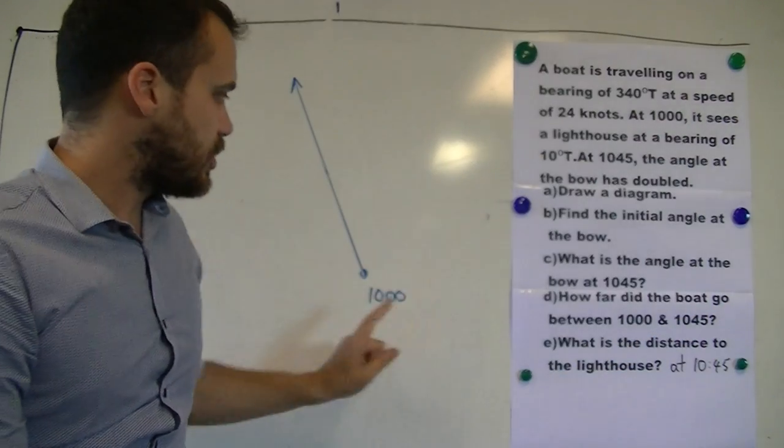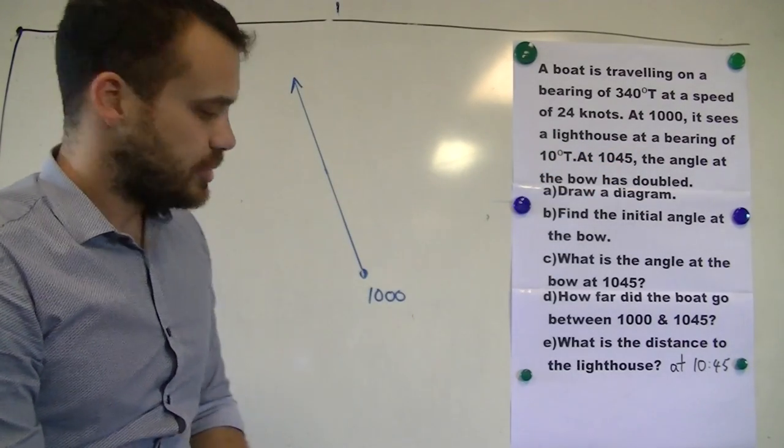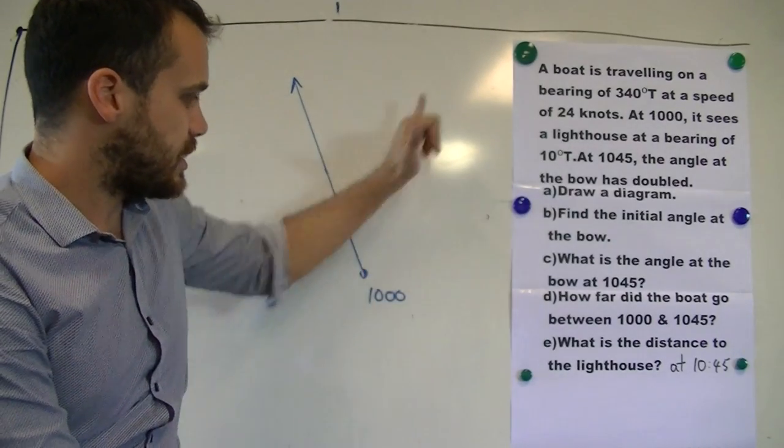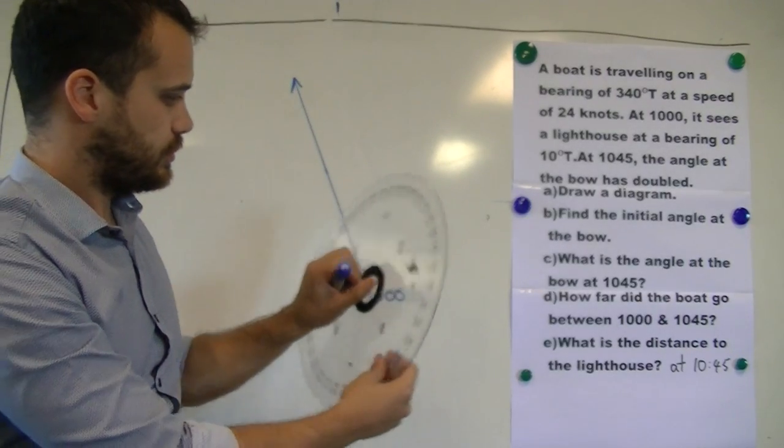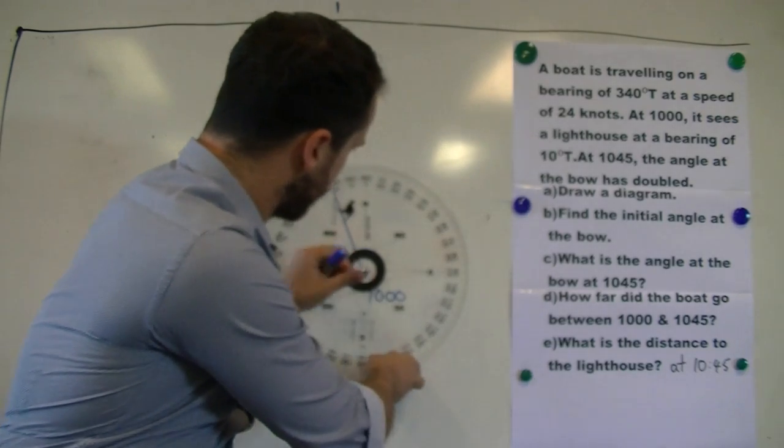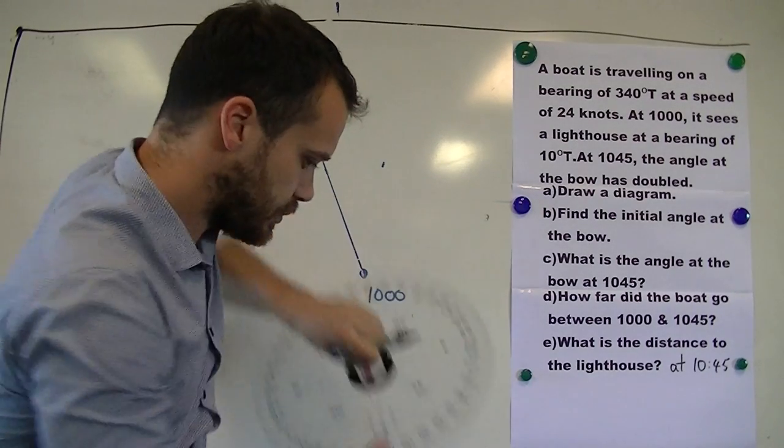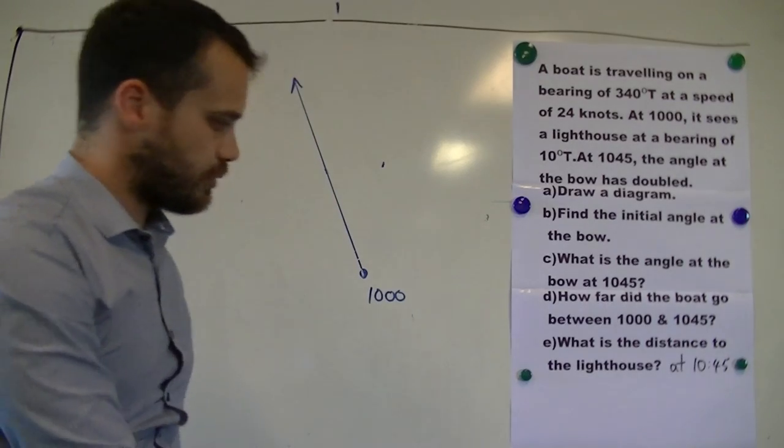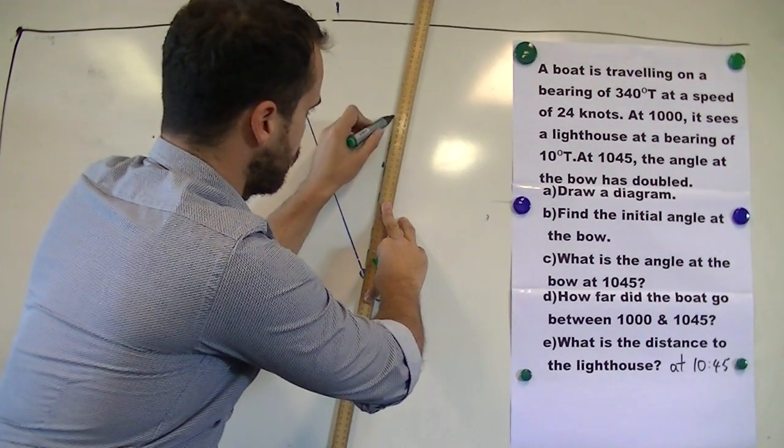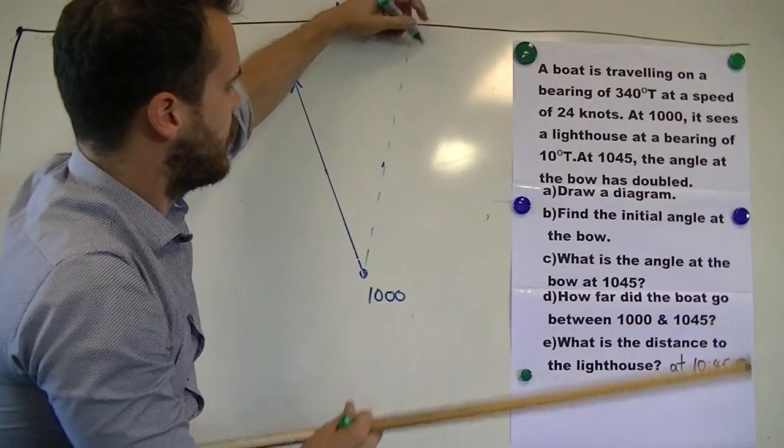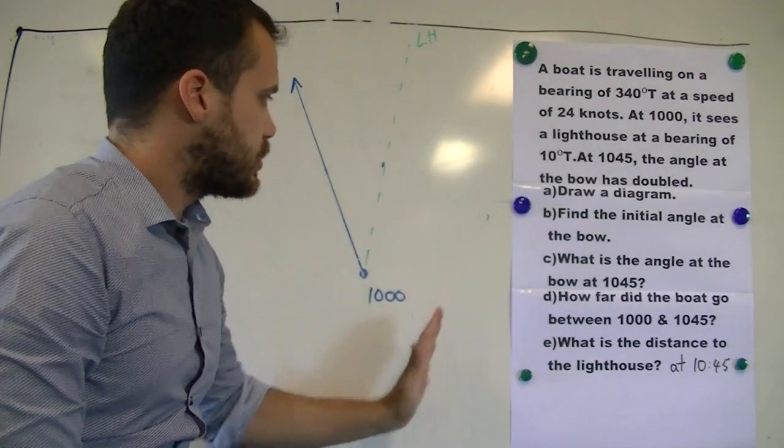Now it also says at 10 o'clock, where our boat is right now, it looks and sees a lighthouse at a bearing of 10 degrees true. So from this point someone looks out and they see a lighthouse at 10 degrees. So again, I'm going to get the protractor out. Now there's north up there, there's my 10 degrees. Now our lighthouse is somewhere along that green line. We're not going to put in where yet, it's just somewhere along that green line.